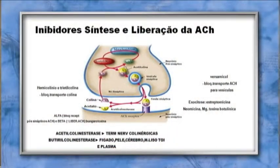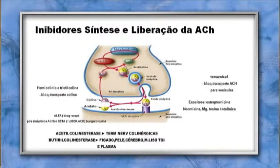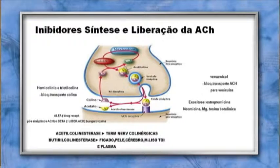Existem inibidores da síntese e da liberação da acetilcolina: a estreptomicina, a neomicina, o magnésio e a toxina botulínica impedem a exocitose da vesícula contendo acetilcolina. O vesamicol bloqueia o transporte de acetilcolina para a vesícula. A acetilcolina é formada a partir da acetil-CoA com a colina, armazenada em vesículas, sendo esse transporte bloqueável pelo vesamicol. O hemicolínio e a trietilcolina bloqueiam o transporte da colina; essa recaptação de colina também pode ser bloqueada por ambos.